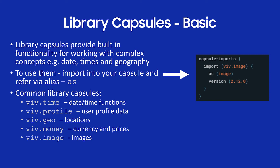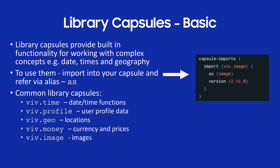Library capsules provide built-in functionality for working with complex concepts like dates, times, geography, etc. The whole idea is that code is pre-written so you don't have to write it yourself. To use them, you import them in your capsule.bxb file — for example, importing viv.image as 'image,' aliasing it so you reference it by that name, with a version number. Common library capsules include time, profile, geo for locations, money for currency and prices, and viv.images. Definitely become familiar with these as they can save you from writing an awful lot of code.